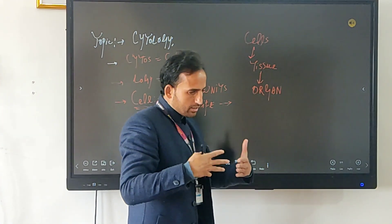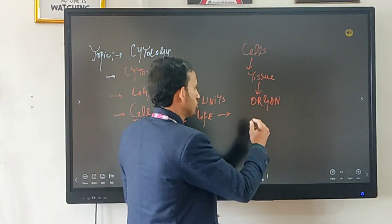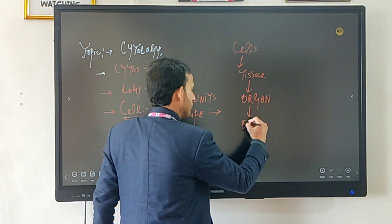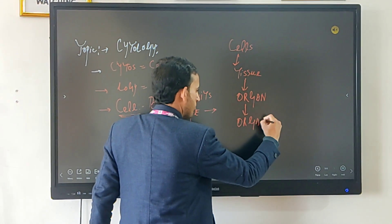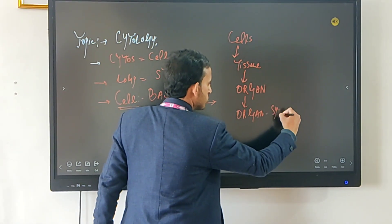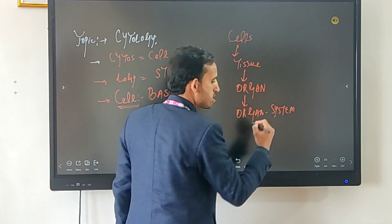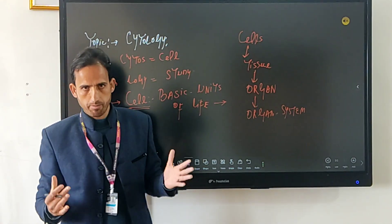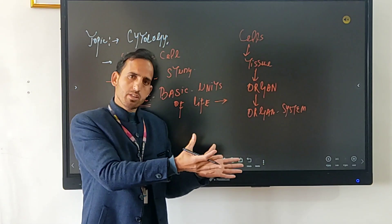Later on, the different organs get combined to form organ system. Our body is composed of different organs. We have the digestive system, we have the respiratory system.